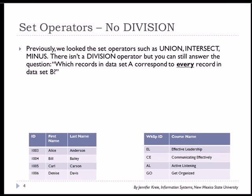Previously in another video, we had looked at the set operators. These involve commands such as union, intersect, and minus. There is not a division operator, but you can still answer the question by using a workaround. So we want to know if there are any records in dataset A, which are the students, that correspond to every record in dataset B, which are the list of workshops.